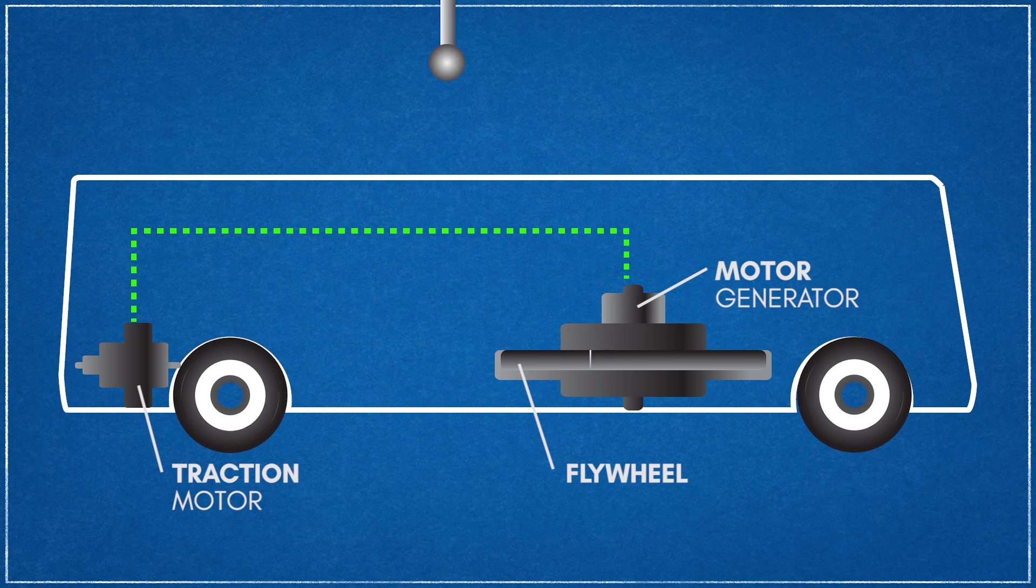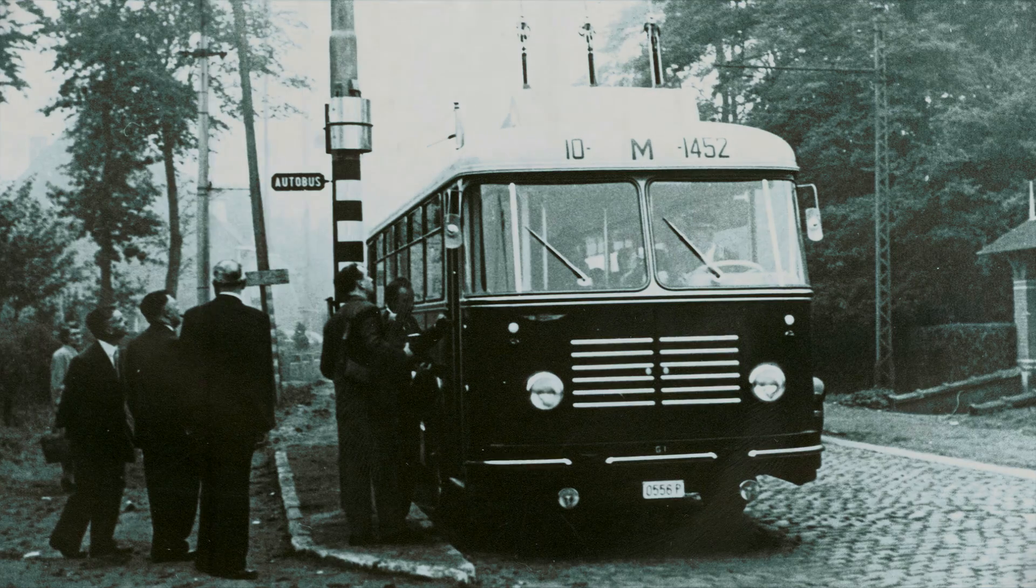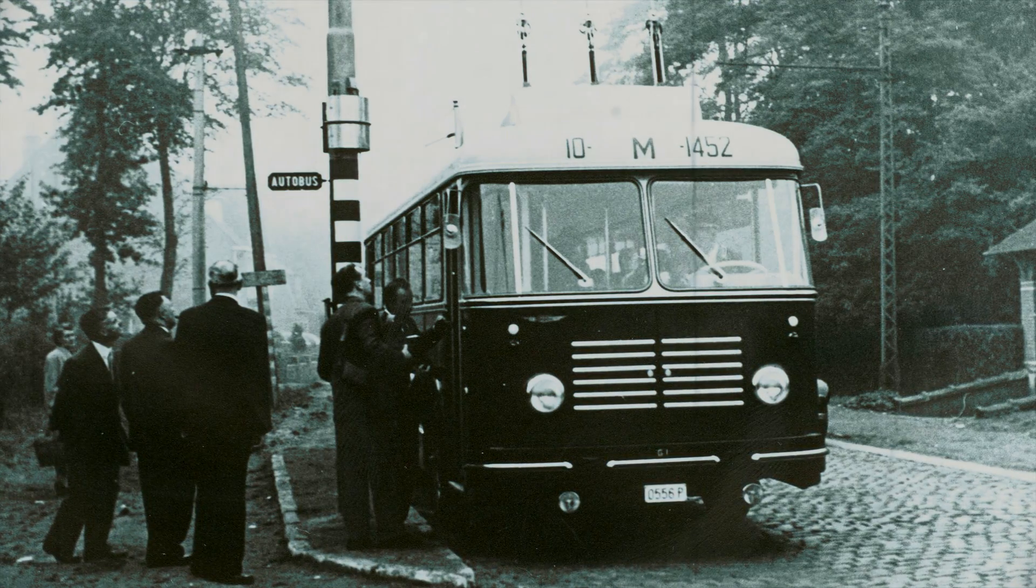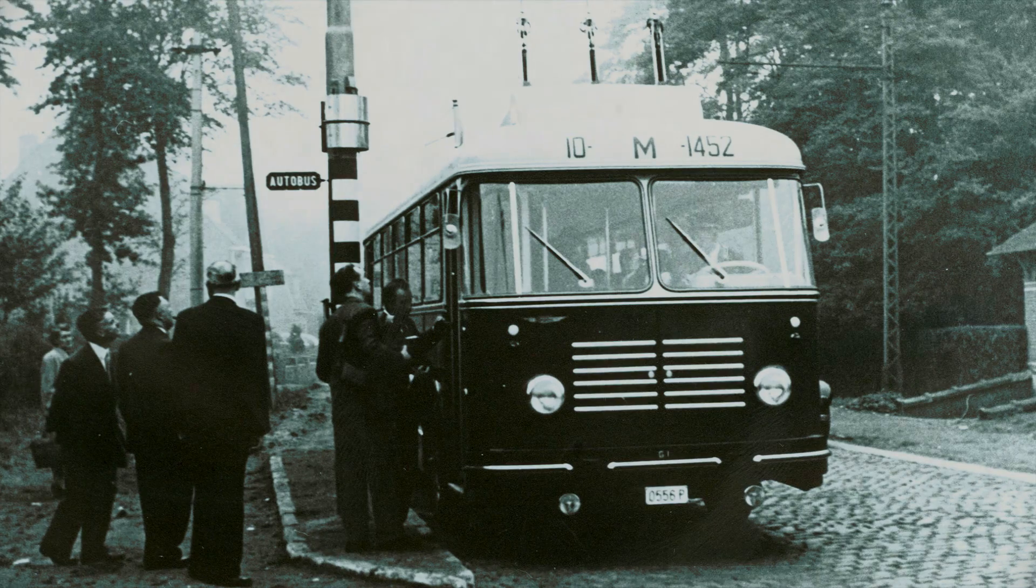To propel the bus, the charging motor would reconfigure as a generator, transforming the rotational energy of the flywheel into electricity, which was subsequently used to drive a traction motor. The traction motor was also used as a regenerative brake, converting the kinetic energy of the wheels back into electricity, powering the flywheel motor, further charging it. These early gyrobuses could travel up to 6 kilometers on level ground at up to 60 kilometers per hour on a 3-minute recharge.